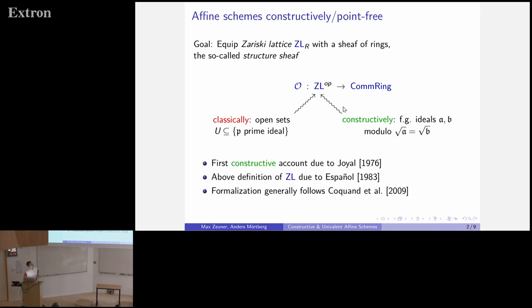Here's a disclaimer. This constructive approach is not due to us. The first point-free description of ZL is due to André Joyal back in the 70s. This more concrete implementation, the one we're using that you can find in the cubical Agda libraries, can be found in a paper by Español. Otherwise, this whole construction of the structure sheaf and more stuff has been described in a paper by Coquand, Lombardi, and Schuster. This is what we follow in our project, mostly.